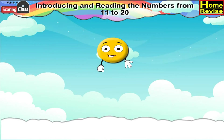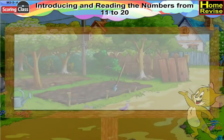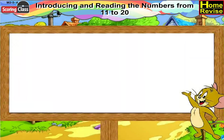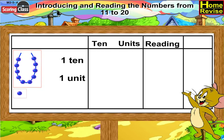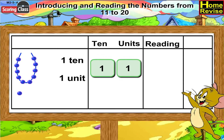Introducing and reading the numbers from eleven to twenty. You can see a string of beads. In the first picture, there is one ten, one unit — that is, a string of ten beads and one single bead, which means one ten, one unit. So under tens you write one, under units you write one, and you read it as eleven, or ten and one.